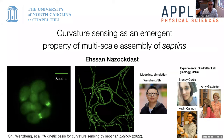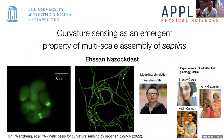Septins, as you can kind of tell by looking at this movie, go and aggregate in areas of high curvature in eukaryotic cells. We want to understand how they do that — how they sense the curvature. Everything I'm going to tell you is in this bioRxiv article; the paper is in review at PNAS but it's essentially the same version.